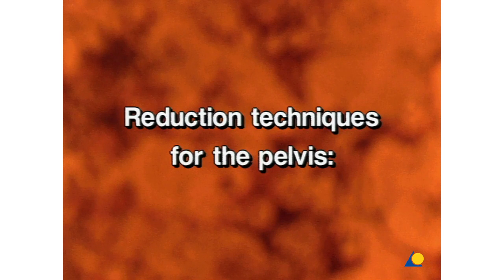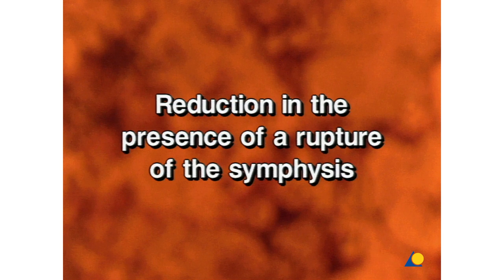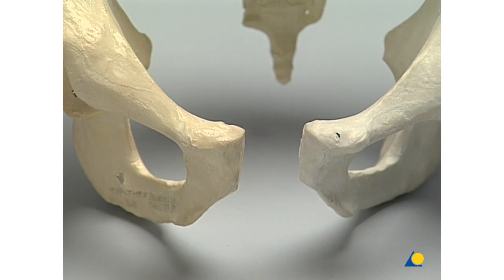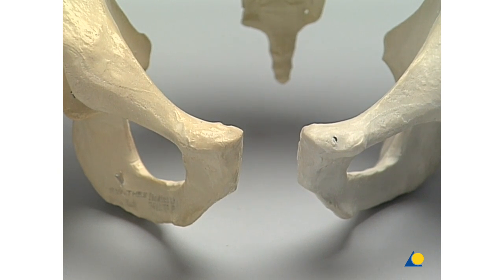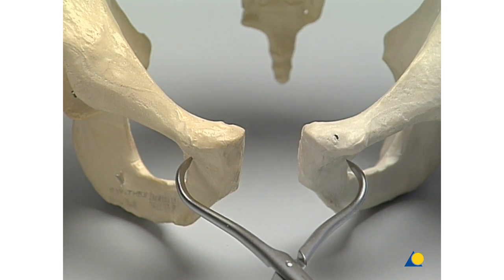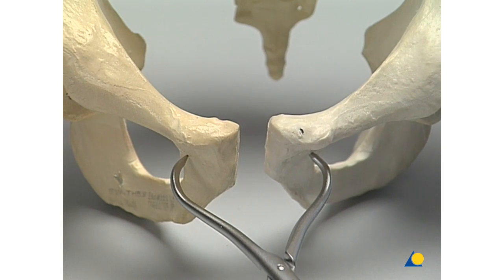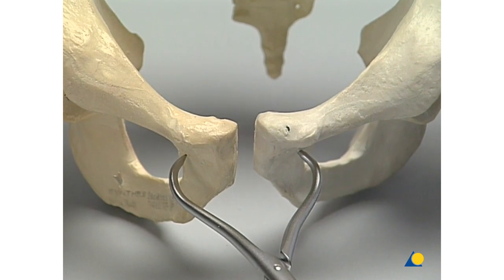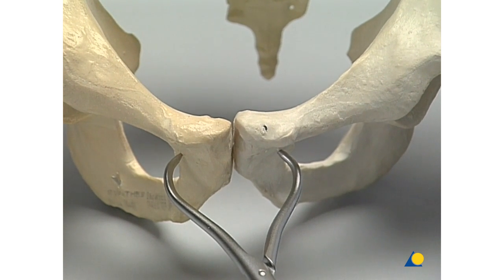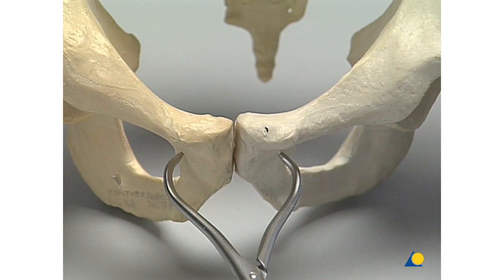Reduction techniques for the pelvis. In the presence of a rupture of the symphysis with a malalignment of the external rotation of one hemipelvis, reduction can be achieved with a pointed reduction forceps. The tips of the forceps are inserted into either the ischiopubic foramen or the bone of the pubic body. Compression of the symphysis and fine adjustment to a dislocation in the cranial or posterior direction are possible.